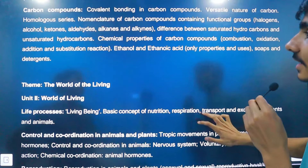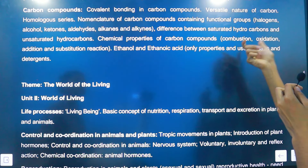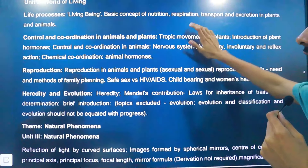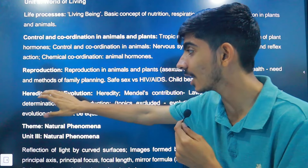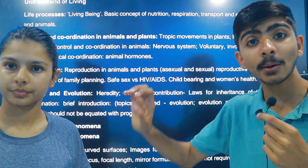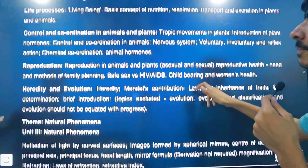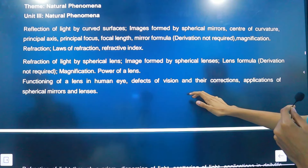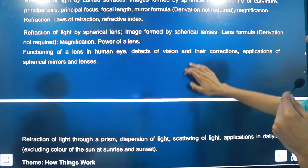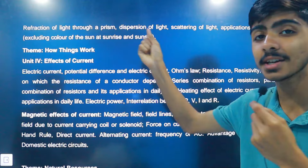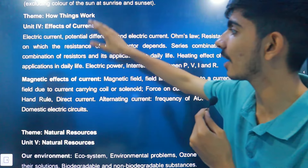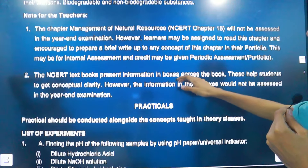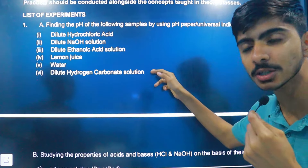Then you have Biology. Some topics are in brackets as extra information — for example, properties and uses of ethanol will come. In Heredity and Evolution, Evolution is completely cut from the syllabus — it was also cut last year. The latest NCERT book will not have evolution, so don't be confused. Also, the color of the sun at sunrise and sunset topic has been excluded from the Human Eye chapter. The last chapter is a small amount of content — important and easy. There are also practical notes for teachers which are not required for you.